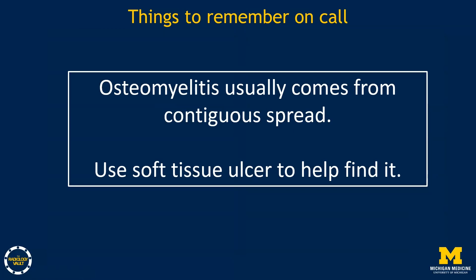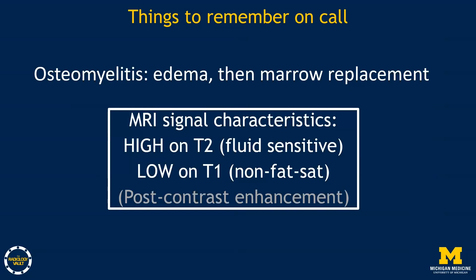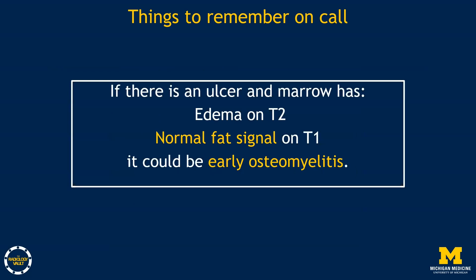To summarize the key points for on-call evaluation: osteomyelitis usually comes from contiguous spread, and you can use the soft tissue ulcer to help find it. Osteomyelitis represents a progression from edema to marrow replacement — on MRI, look for high signal on T2-weighted images, then low signal or marrow replacement on T1-weighted images. Post-contrast enhancement is helpful but not required to make the diagnosis. If you see a soft tissue ulcer with underlying marrow edema on T2 but normal fat signal on T1, that could be early osteomyelitis. Keep the process in mind and you'll be set to evaluate osteomyelitis on call.